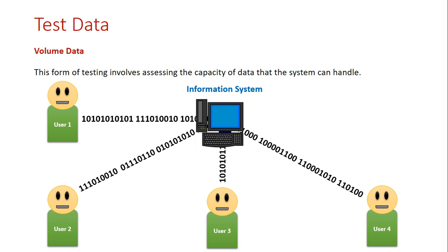To summarize, this video has covered three types of test data. Simulated data is supplied by the project team to assess expected data going into the system, as well as unexpected outcomes. Live data is real-world data supplied by participants, ensuring the system can complete tasks using real data and responds correctly. Volume data testing checks the capacity of data the system can handle, whether it's a lot of data from one user or lots of data coming from multiple users.